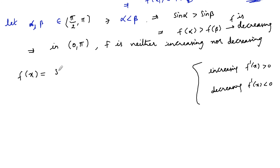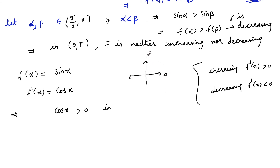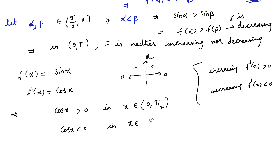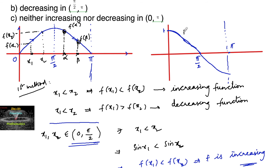Since f(x) = sin x, differentiating gives f'(x) = cos x. We know that cos x is positive in the first quadrant and negative in the second quadrant. So cos x is positive for x ∈ (0, π/2) and cos x is negative for x ∈ (π/2, π). This is also visible from the cos x graph, which is positive from 0 to π/2 and negative from π/2 to π.